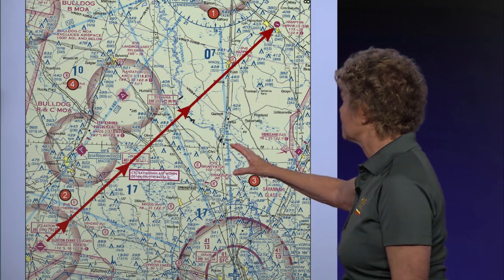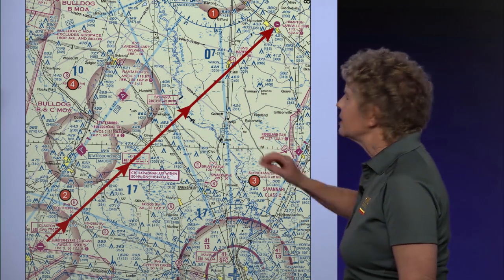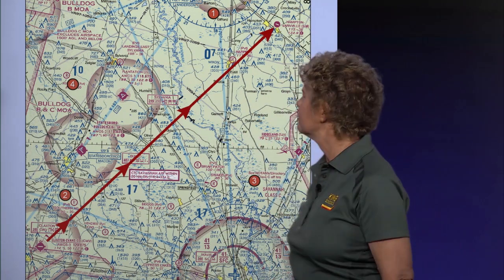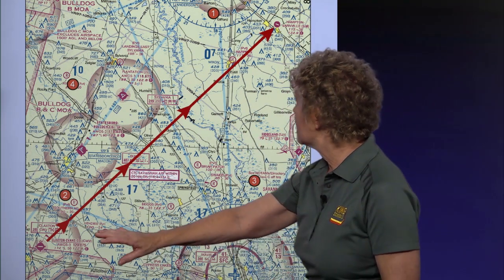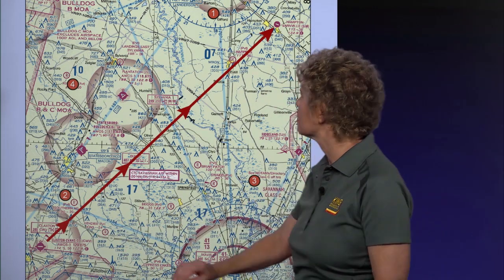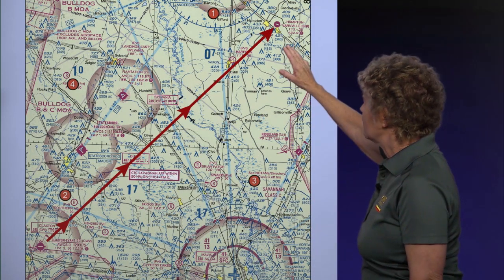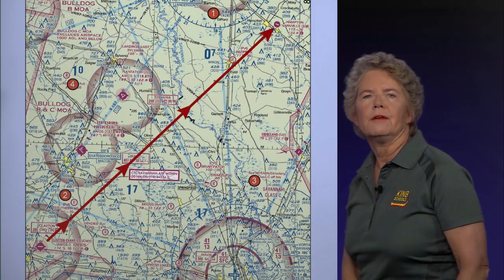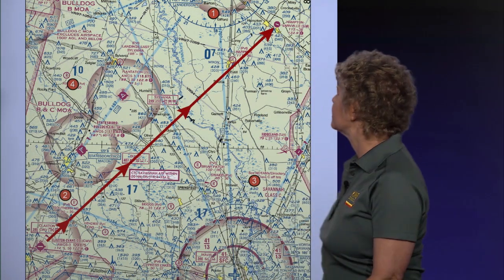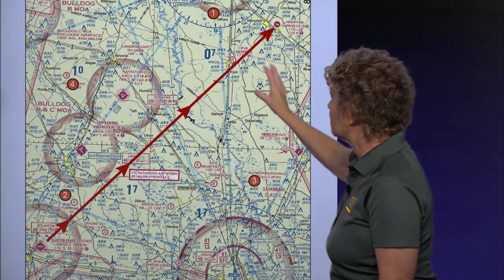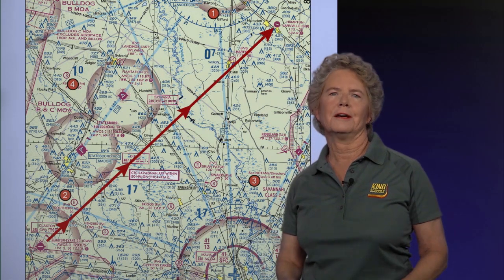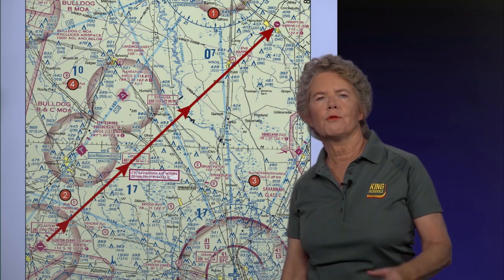Let's take a look at this chart, and let's assume that you're on a flight starting at Claxton Evans County Airport in the lower left hand corner of the chart down in Area 2, and you're going up to Hampton-Varneville Airport in the upper right hand corner of the chart, which is in Area 1. The question you're trying to answer is: what compass heading will you need to fly for that trip?